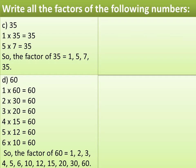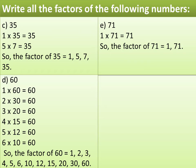Find the factors of 71. Think of the possible combinations of 71. Always start listing the factors with 1 and the number itself. So 71 can be written as 1 multiplied by 71 equals 71. But 71 is not divisible by any number other than 1 and 71. So the factors of 71 are 1 and 71.